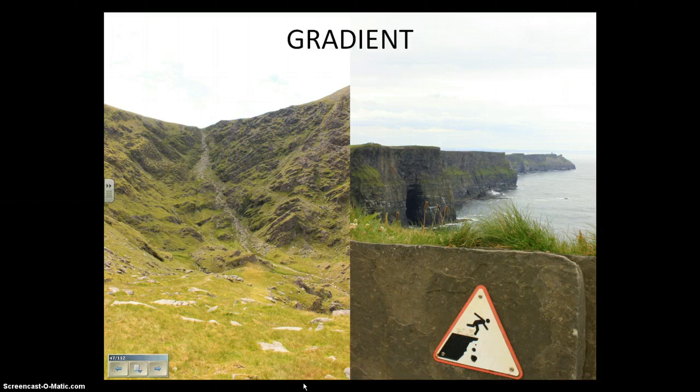On the right, another example of a steep gradient. These are the cliffs of Moher on the west coast of Ireland, about an hour from the city of Galway. There's that picture of a guy almost falling off a cliff - this is a very steep place, a place that we would say has a very high gradient. Actually, that cave that you see on the right was used in the filming of a recent Harry Potter film.